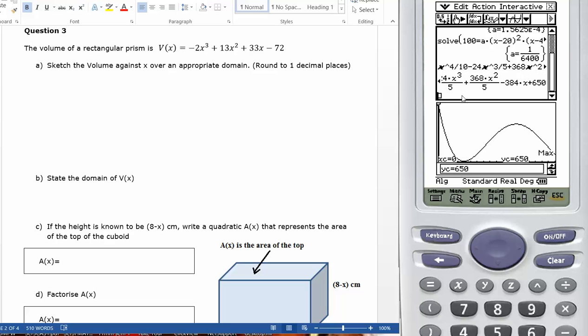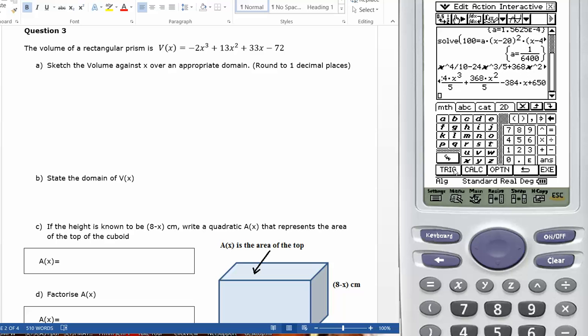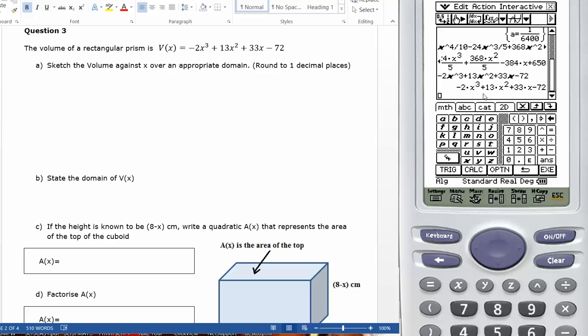Okay, since I've got a calculator, I'm going to have a look and see what it looks like. So I've got my keyboard. I'm going to pause this while I type it. There it is. Then I'll press execute. Just double check. Minus 2x cubed plus 13x squared plus 33x minus 72. And I've got multiplications between the 2 and the x, the 13 and the x squared, and the 33 and the x. So that's nice.